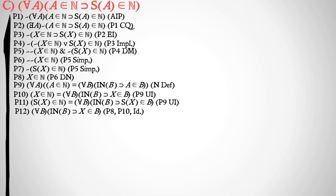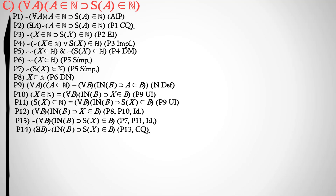We're going to use premise 8, premise 10, and identity. We have X is a member of N, so we can show that for all B, if B is inductive, then X is a member of B. We also use identity on premise 7 and 11, which gets us the negation of the second half: it's not the case that for all B, if B is inductive, then the successor of X is a member of B.